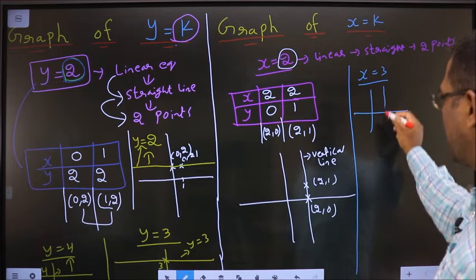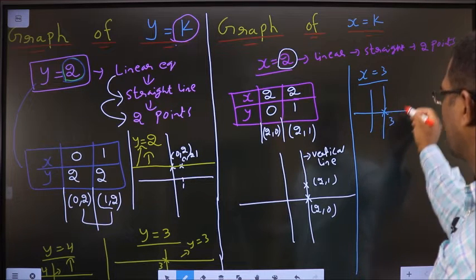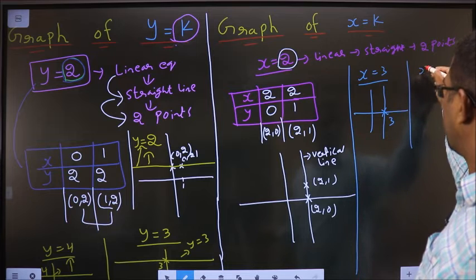Same way, if I consider x equal to 3, again I will get a vertical line passing through 3. If I select x equal to 30, I still get a vertical line passing through 30.